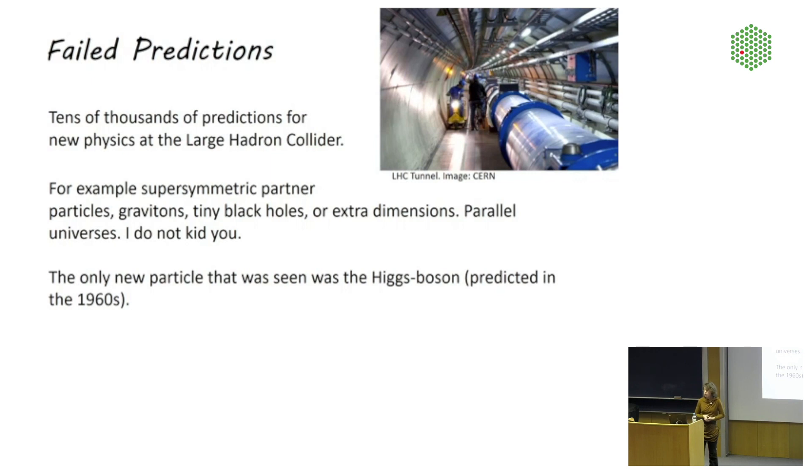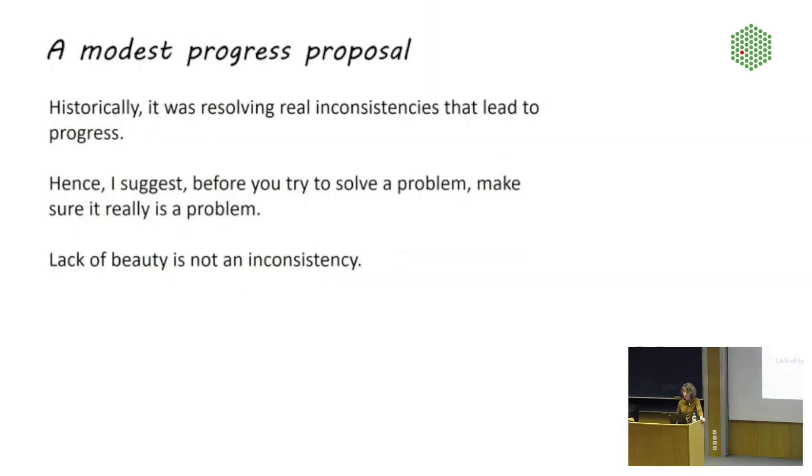And yes, then I already told you about this. There were lots of predictions for new physics at the Large Hadron Collider. People are sometimes shocked when I say there have been tens of thousands of those predictions, but that's just the number of papers that people have written in which they calculated what was supposed to happen at the Large Hadron Collider, none of which actually did happen. The only particle that they actually saw was the Higgs boson that was predicted already in the 1960s. And that, I have to emphasize, was not a prediction based on an argument from beauty. It was a prediction based on an argument from consistency. I have a little bit more to say about this on the next slide.